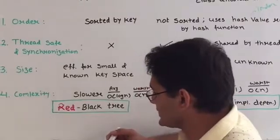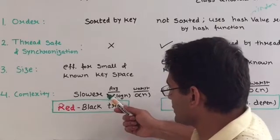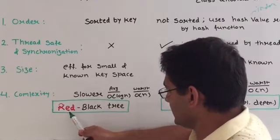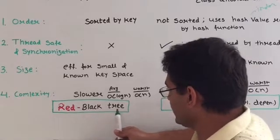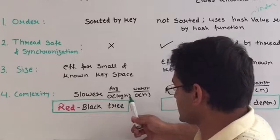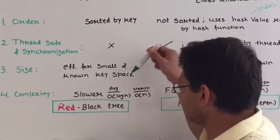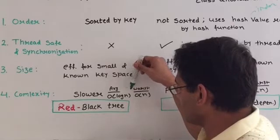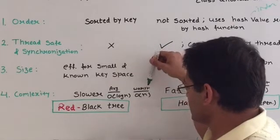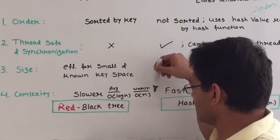The last difference is space and time complexity. Maps are relatively slow because of their internal implementation. It is implemented as a red-black tree. We know that for binary trees, search, deletion, and insertion can be done in O(log n) time. And in the worst case, it can search, delete, or insert in O(n) time.